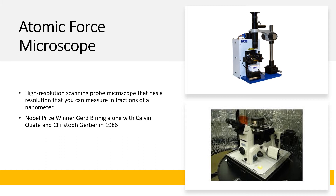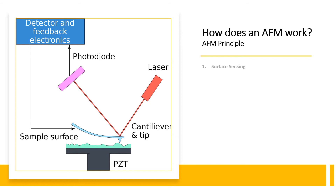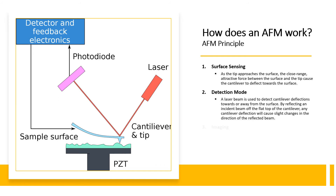So how does an AFM work? The first AFM principle is surface sensing. An AFM uses a cantilever with a very sharp tip to scan over a sample surface. As the tip approaches the surface, the close-range attractive force between the surface and the tip causes the cantilever to deflect towards the surface. However, as the cantilever is brought even closer such that the tip contacts it, an increasingly repulsive force takes over and causes the cantilever to deflect away from the surface. The second principle is the detection method. A laser beam is used to detect cantilever deflections towards or away from the surface by reflecting an incident beam off the flat top of the cantilever, so any cantilever deflection will cause slight changes in the direction of the reflected beam.